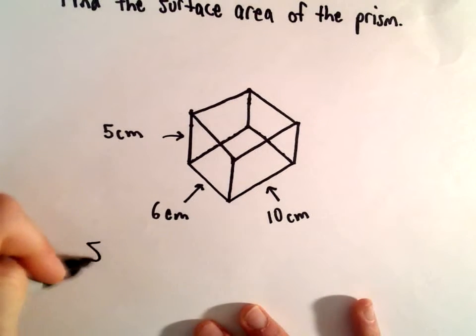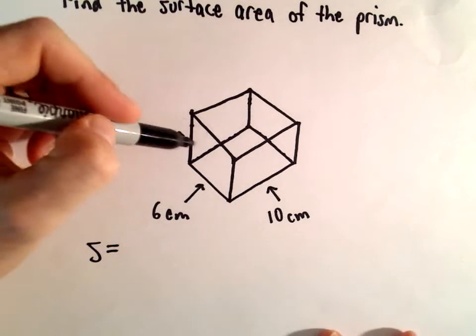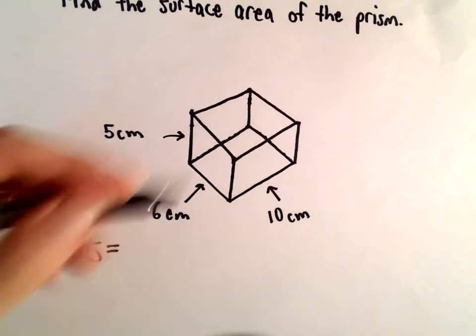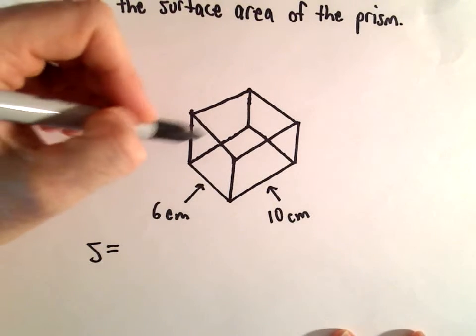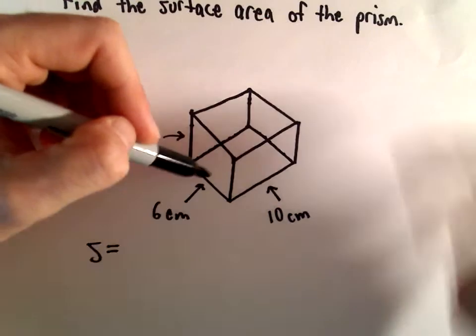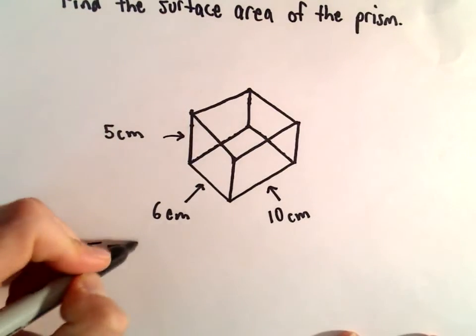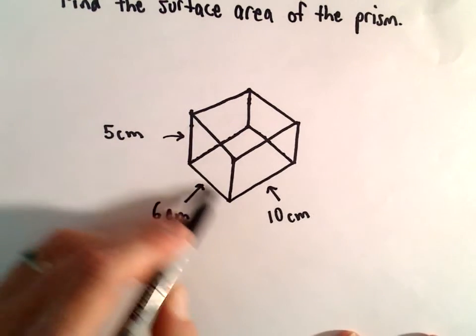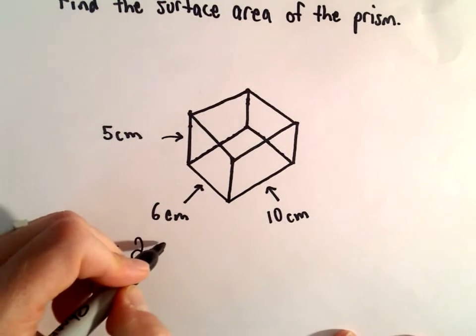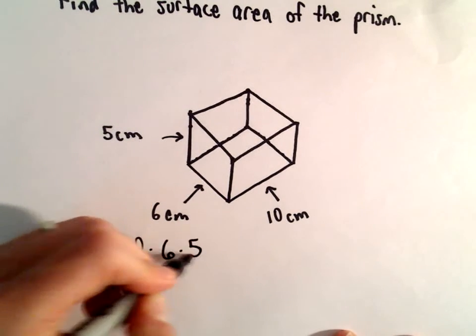So, to find the surface area of our box here, I'm going to find, if you think about the area on the front face and then the back face, that'll be two times the length times the height. So, two times six times